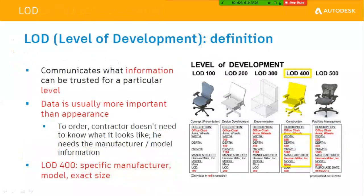As we move through the BIM process, we call this the Level of Development (LOD). For each phase we have LOD 100, LOD 200, LOD 300, and so on. LOD 100 carries only minor information — just a description. When it goes to LOD 200, we add sizes. At LOD 300 to 400, that's where the manufacturer's information comes into play. As a manufacturer, we get involved somewhere between LOD 300 and LOD 400 — sometimes called LOD 350. LOD 500 is the as-built stage, containing all necessary information.